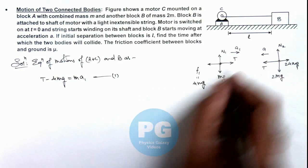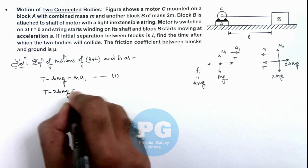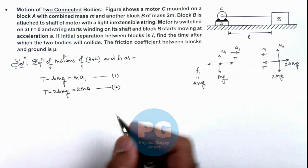For B we can write the equation will be T minus 2μmg is equal to 2ma, the acceleration of block B is given to us. Say it is equation 2.